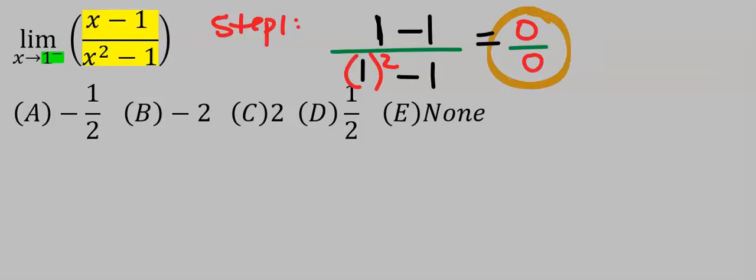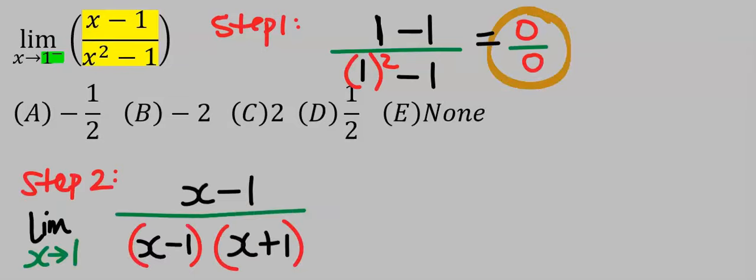By plugging in, you're going to get zero over zero. Next, step number two: we're going to apply L'Hopital's rule, and we're going to apply difference of two squares to the denominator.